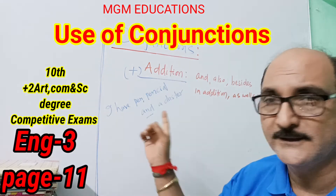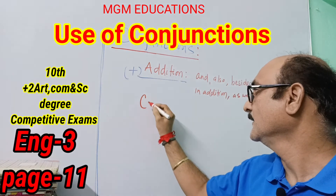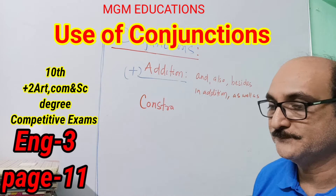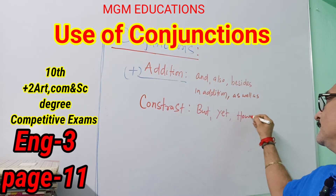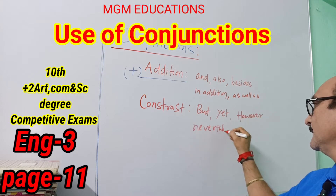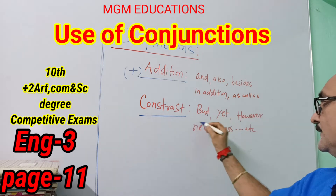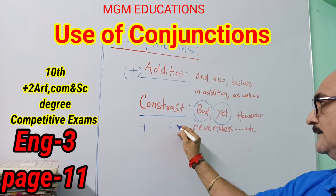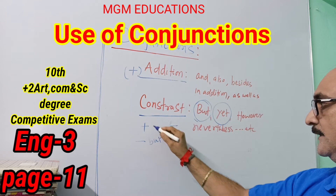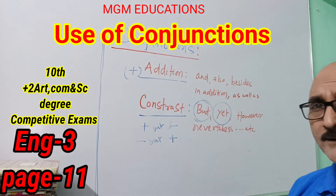The next one is the conjunction of contrast. Such as: 'but', 'yet', 'nevertheless', 'however'. Many are there — just remember these so that you are able to connect sentences into a paragraph. This is contrast. In contrast, one thing goes against another — a positive against a negative. We use 'but', 'yet', 'however', and similar conjunctions. When one idea goes against another, it is called the conjunction of contrast.